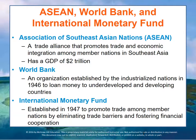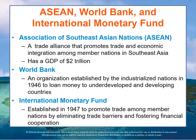Another agreement is ASEAN, along with the World Bank and International Monetary Fund. ASEAN was established in 1967 and promotes trade and economic integration among member nations. These nine-member alliances represent 600 million people with a GDP of $2 trillion. The World Bank, more formally known as the International Bank for Reconstruction and Development, was established by the industrialized nations including the United States in 1946 to loan money to underdeveloped and developing countries as a means to promote economic development. The International Monetary Fund was established in 1947 to promote trade among member nations by eliminating trade barriers and fostering financial cooperation. The IMF is the closest thing in the world to an international central bank.